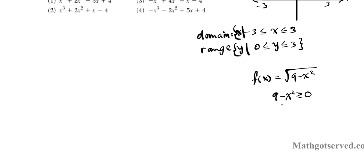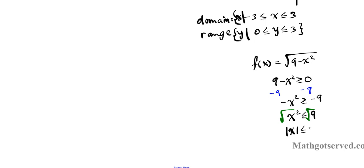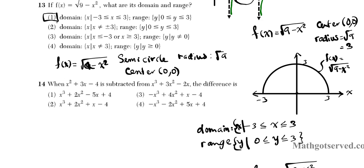Subtract 9 from both sides to get −x² ≥ −9, then divide both sides by −1 — remembering that dividing an inequality by a negative flips the inequality symbol — giving x² ≤ 9. Taking the square root of both sides gives the absolute value of x ≤ 3, which in sandwich notation means −3 ≤ x ≤ 3. That is your domain, confirming the answer is option number 1.